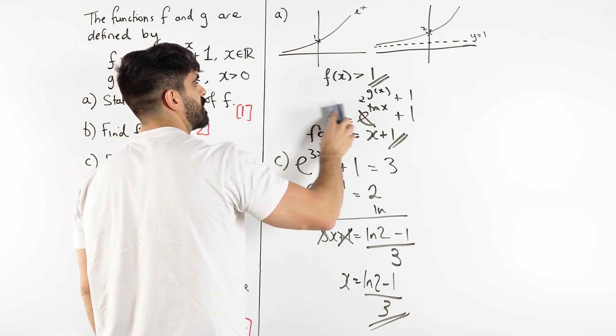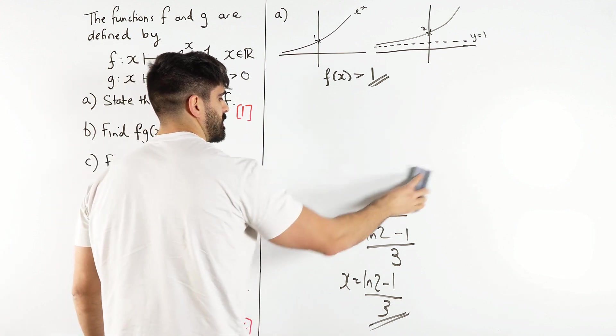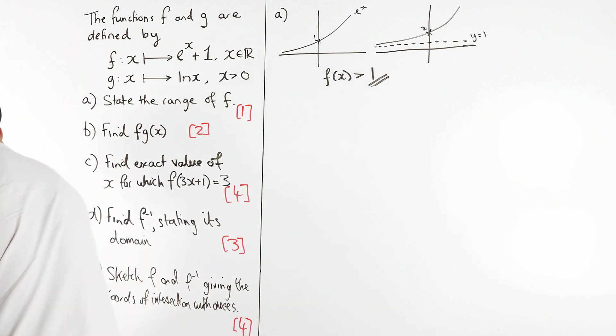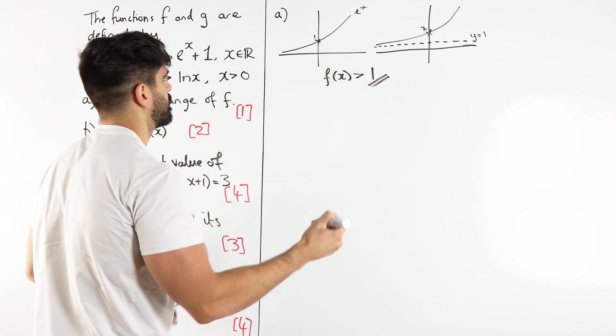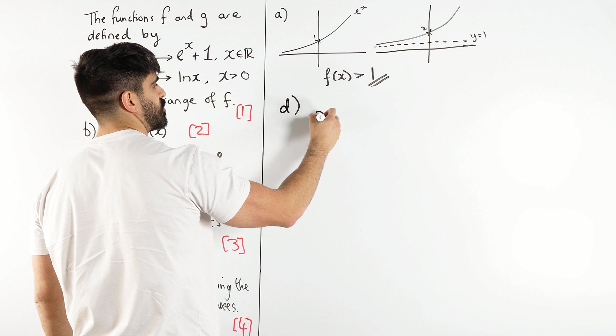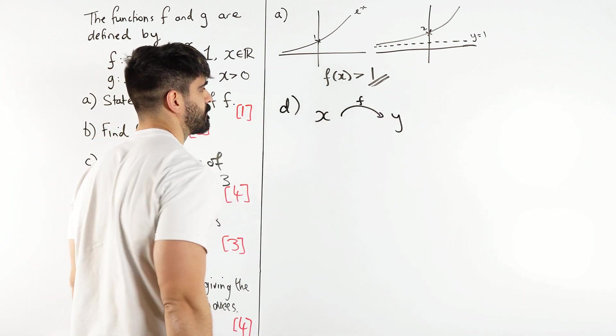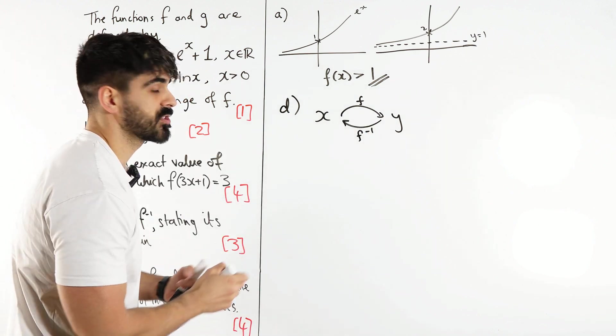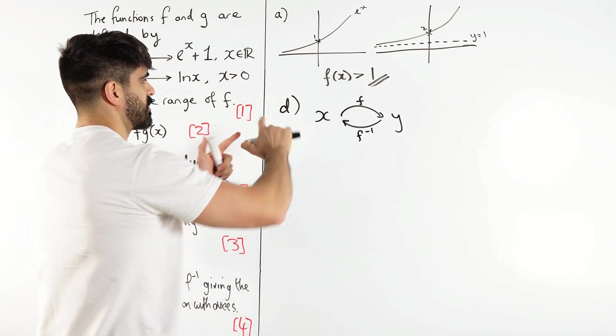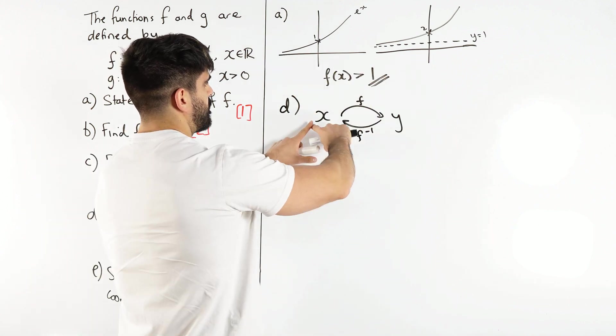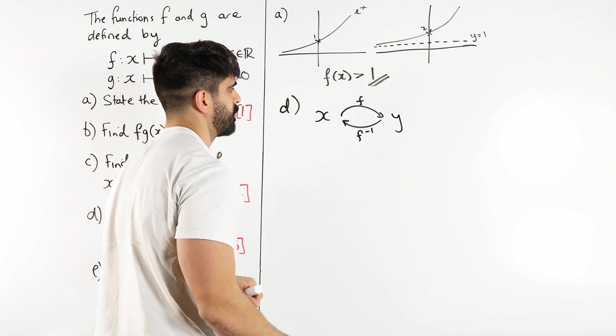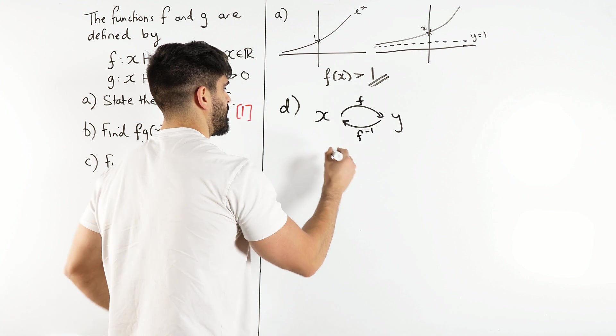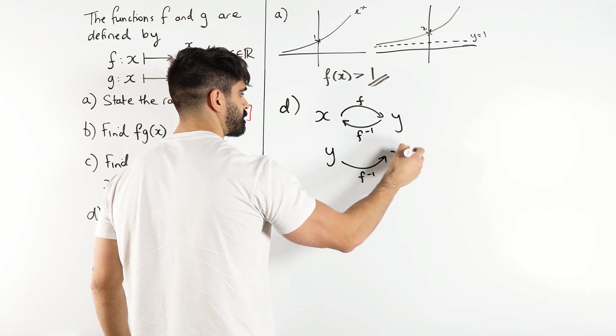Now, what does the inverse even mean? These are like function machines, right? So a function takes you from the domain to the range. Meaning f takes you from your x values to your y values. Now the inverse takes you from your y values to your x values. So you're going the other way around. But to define this function, we need to look at this way around. So f does this way, f^(-1) takes you that way. But you're basically having to look at it from the other side. So you're basically going to switch these around.